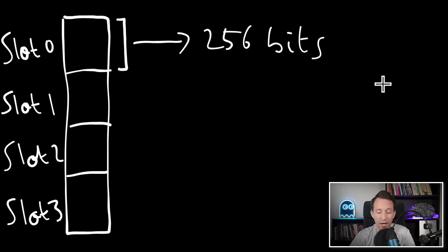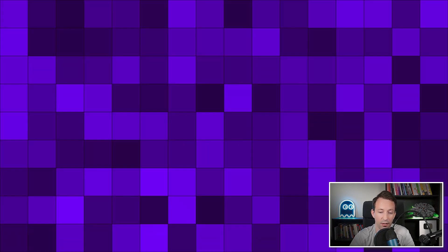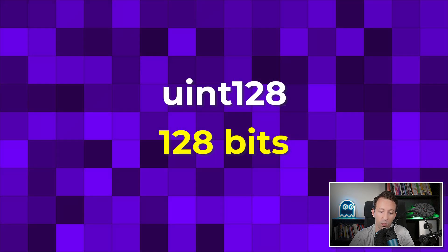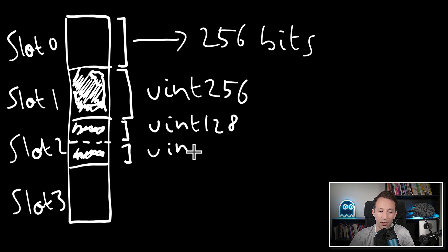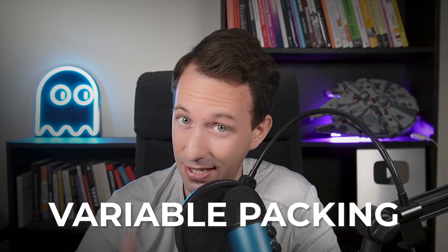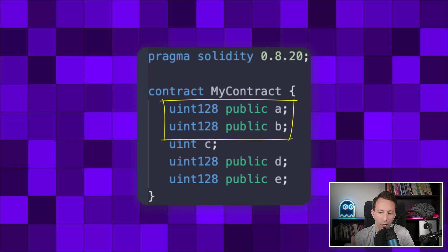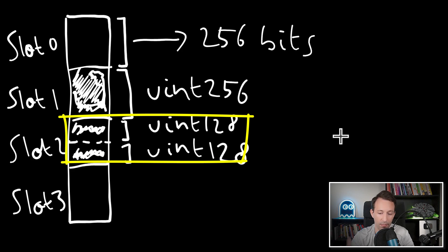The next trick is about variable packing. The storage in the Ethereum virtual machine is divided into slots of 256 bits. By default, simple variable types like uint take one slot. However, some types don't need 256 bits — for example, a uint128 only needs 128 bits, so in theory you could pack two uint128 values into a single storage slot. Solidity does this optimization in some cases: all you have to do is group the variables that can be packed together in your variable declarations, and Solidity will pack them into the same slot.